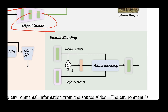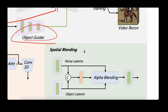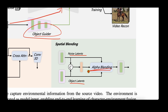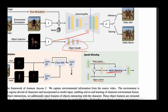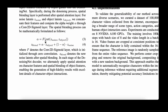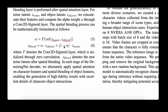A small but important detail is how the object latents are blended with the noise latents. Instead of direct concatenation, they use an alpha blending factor — a weightage between the noise latents and object latents — giving more control over which dominates. For example, if alpha is 0.8, it's 0.8 of the object latent and 0.2 of the noise latent.